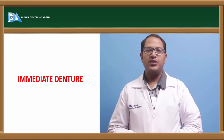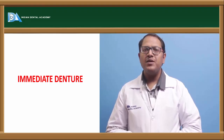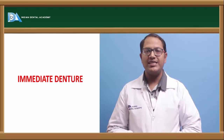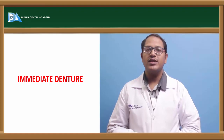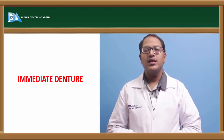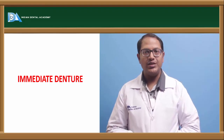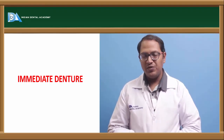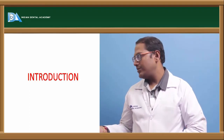Hello everyone. Now we are talking about immediate dentures. The name tells us very clearly — it is an immediately placed denture. But immediately placed after what? Immediately placed after surgery, that is surgical extractions. After the extraction of the teeth has happened, due to the patient's need, we will prepare an immediate denture. Now we will see what are the different types of immediate denture and how we go ahead with preparing an immediate denture.